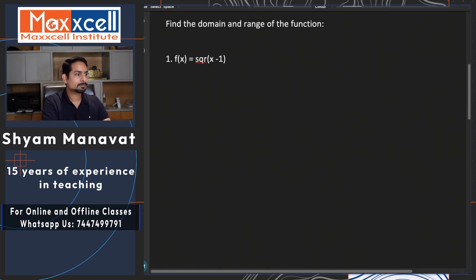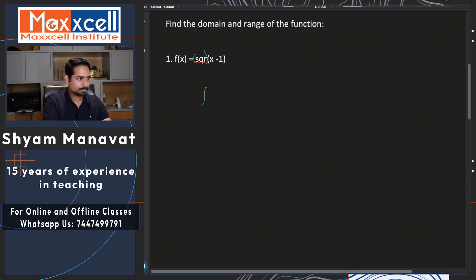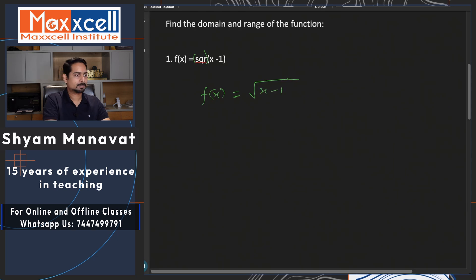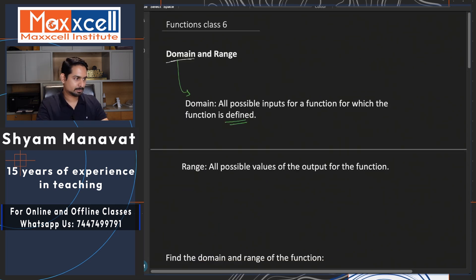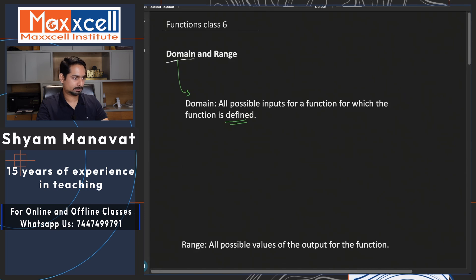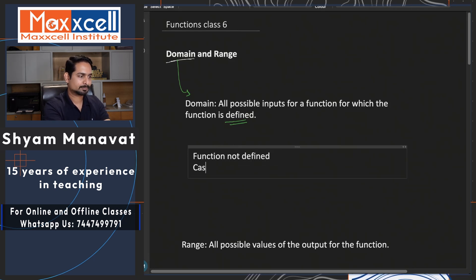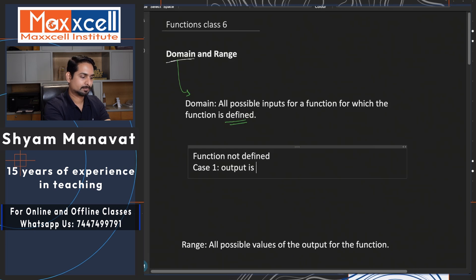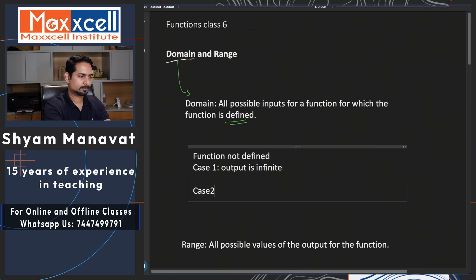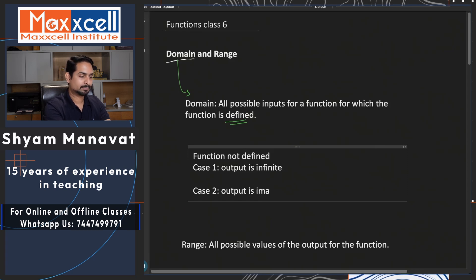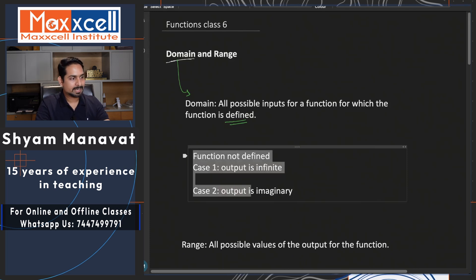Let me show you with an example. So domain and range for this function — this is a square root function, f of x. The function is not defined in certain cases. Let us note those cases down near domain. You get a function not defined in case the output is infinite, or the output is imaginary. In these two cases, you will find the function is not defined.